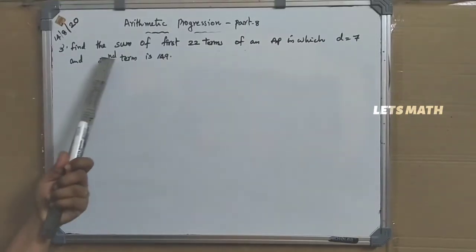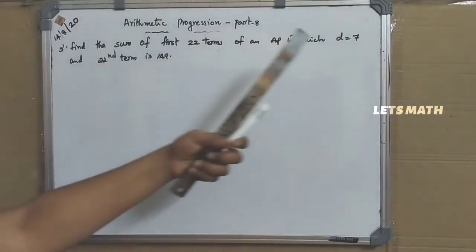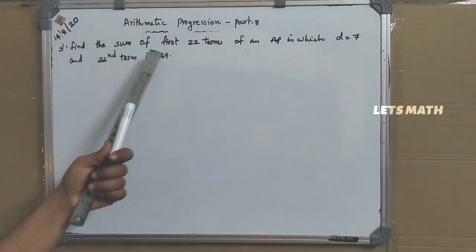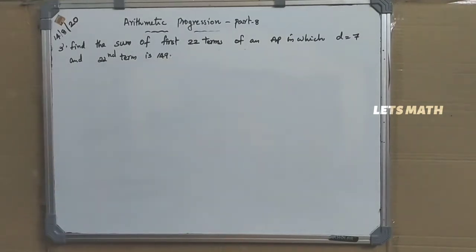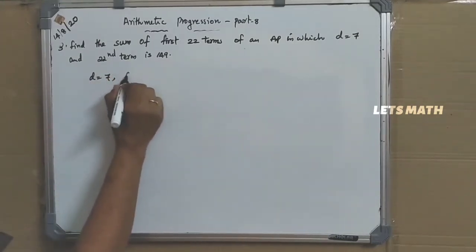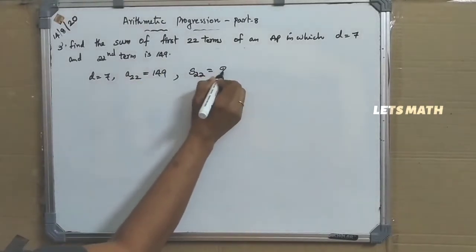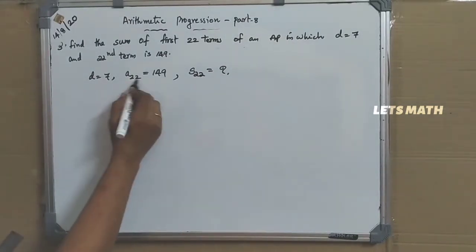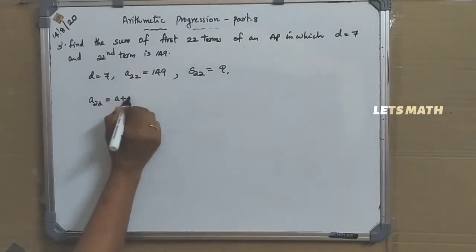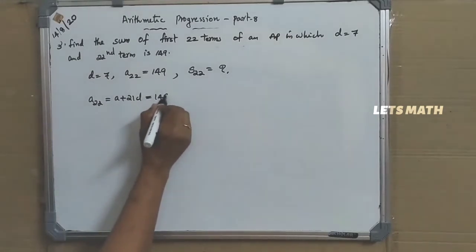Next question: find the sum of first 22 terms of an AP. It is given that D equal to 7 and the 22nd term is 149. So we have to find S22. We have A22 equal to A plus 21D equal to 149.